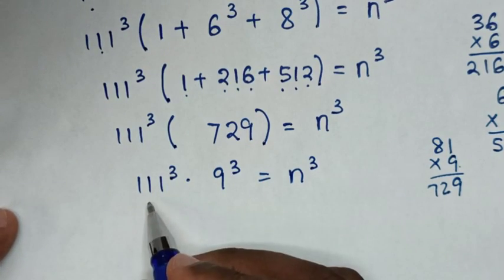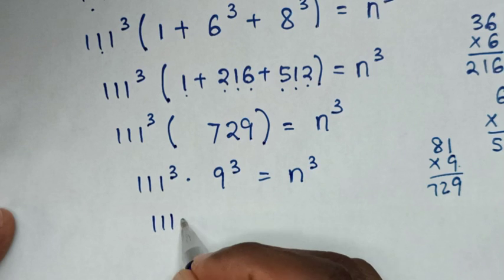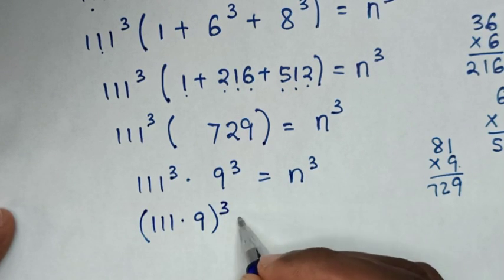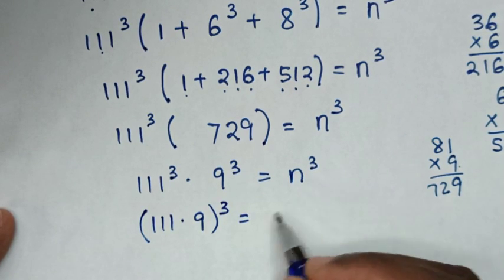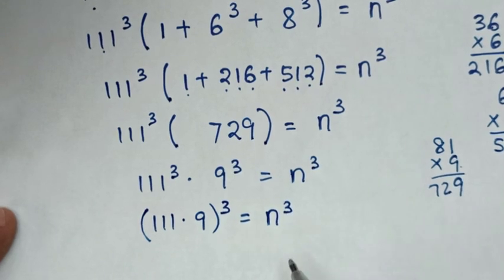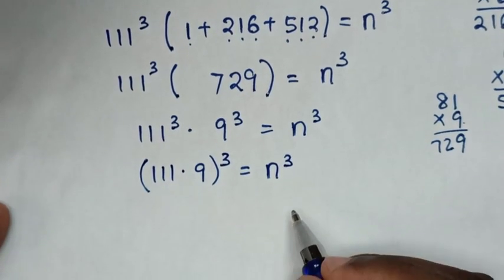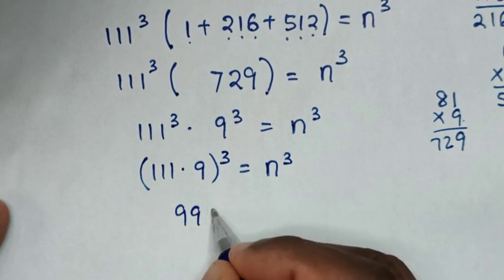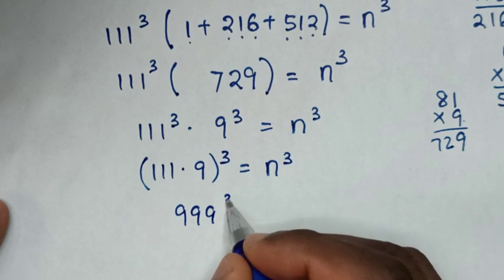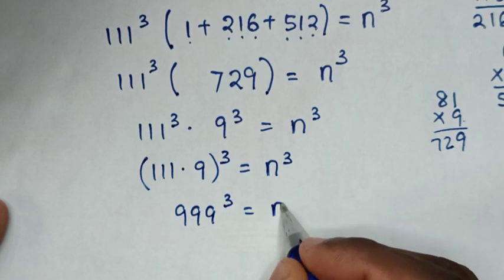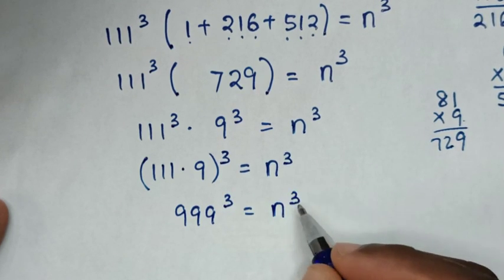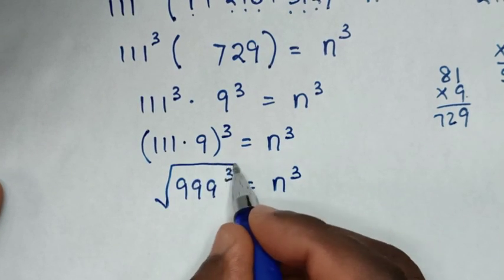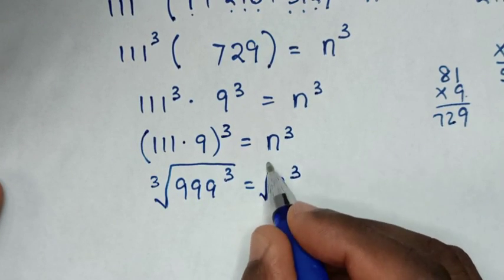Since the power of 3 is common, it will be 111 times 9, bracket power of 3, is equal to n power of 3. Then 111 times 9 is 999, so 999 power of 3 is equal to n power of 3. Then we apply cube root on both sides.